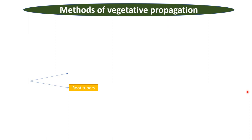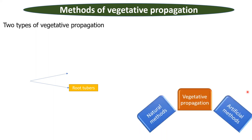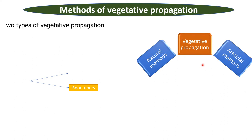Next we talk about methods of vegetative propagation — in how many ways plants can be propagated vegetatively. There are two types: one is natural methods of vegetative propagation, and the second one is artificial methods of vegetative propagation.